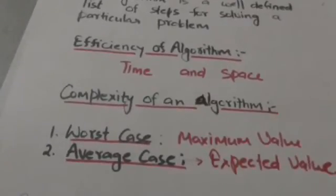Usually we find the complexity of an algorithm for two cases: worst case and average case. In worst case we find the maximum value of complexity for any possible input. In average case we find the expected value of complexity.